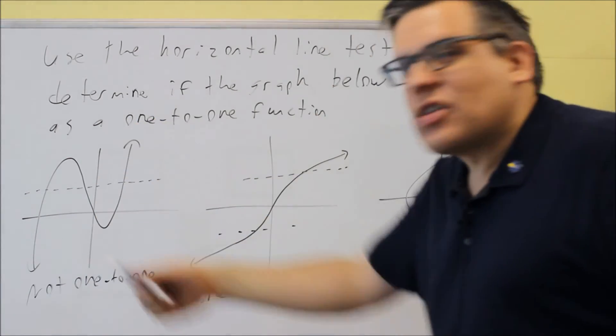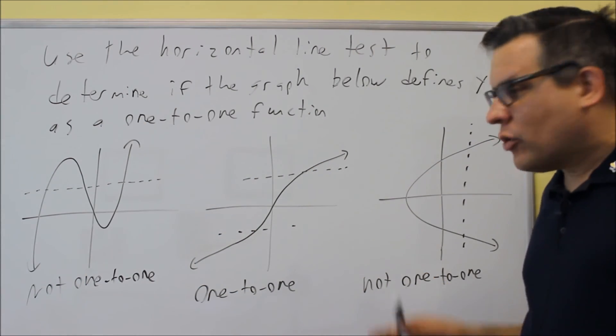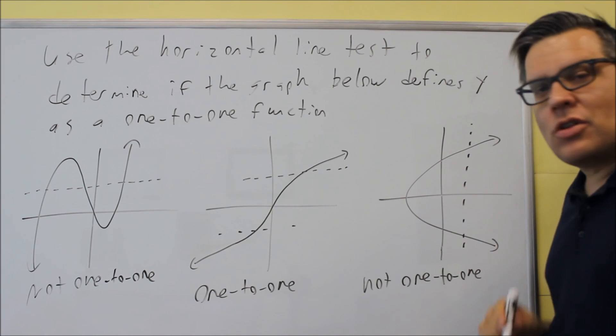But these other ones, it does pass the vertical line test. If you draw a vertical line through, it only hits the graph in one spot. So the only one that's one-to-one is going to be this second one.